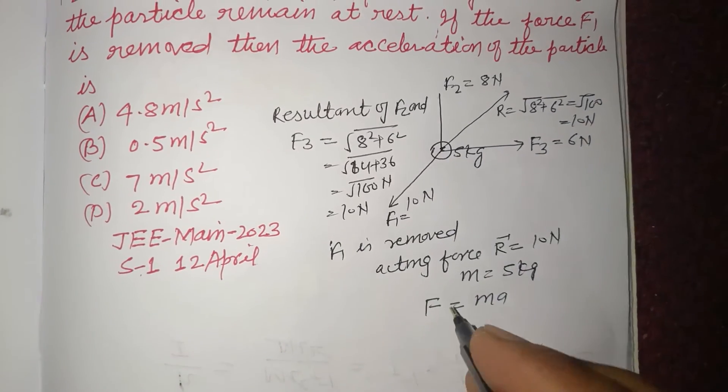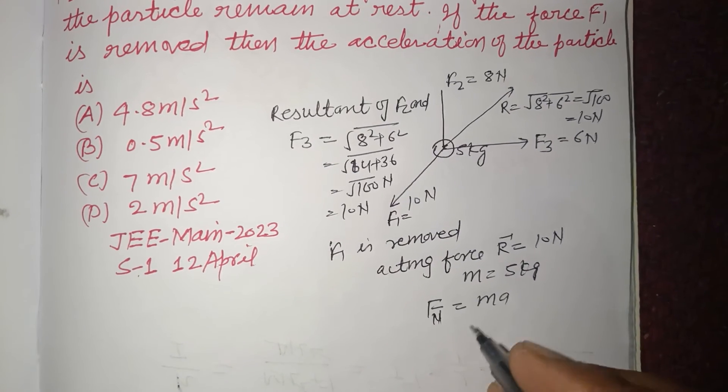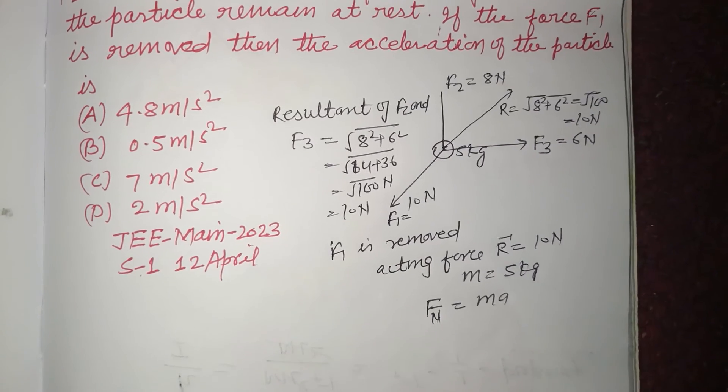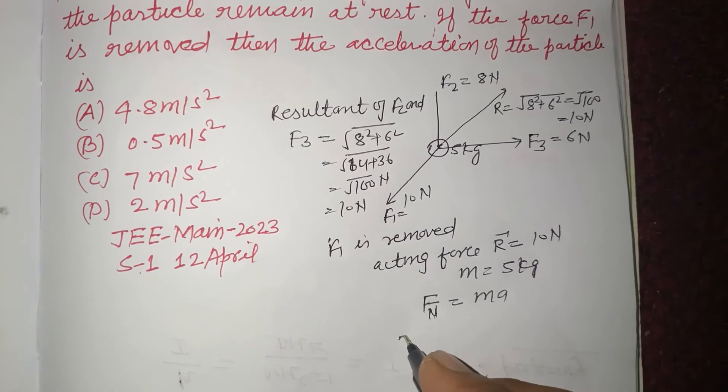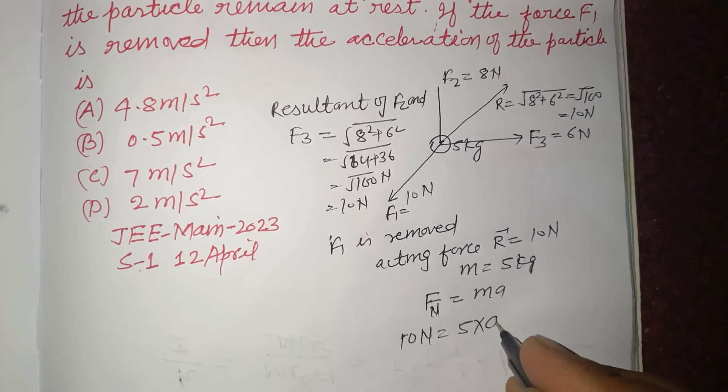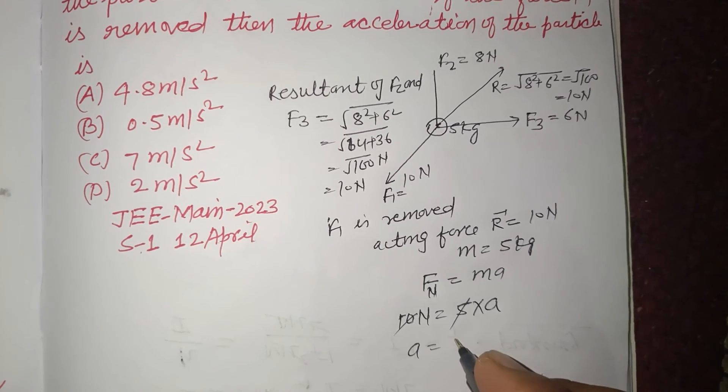or F is the net force because net force acts according to Newton's second law on a body. So it is 10 N, mass is 5, and so a equals